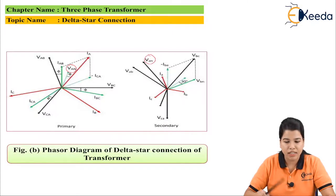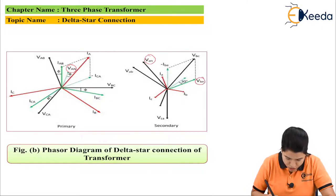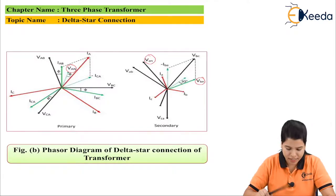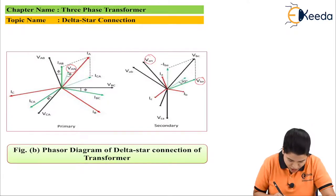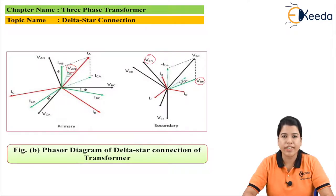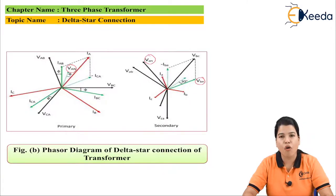Similarly, the voltage Vbn of the secondary winding is leading the corresponding primary voltage by 30 degrees. The same applies to the voltage Vcn, which will lead the voltage VCN by 30 degrees. Similar relationships can be obtained for the current.